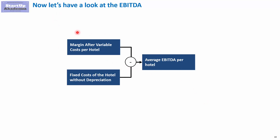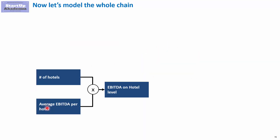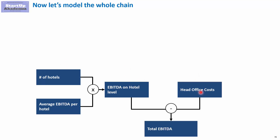Once we have the fixed and variable costs, we can get to the EBITDA per hotel: we take the margin after variable cost and deduct the hotel's fixed costs to get the average EBITDA per hotel. Since we want to model for a chain of hotels, we take that average and multiply it by the number of hotels to get the EBITDA at hotel level.